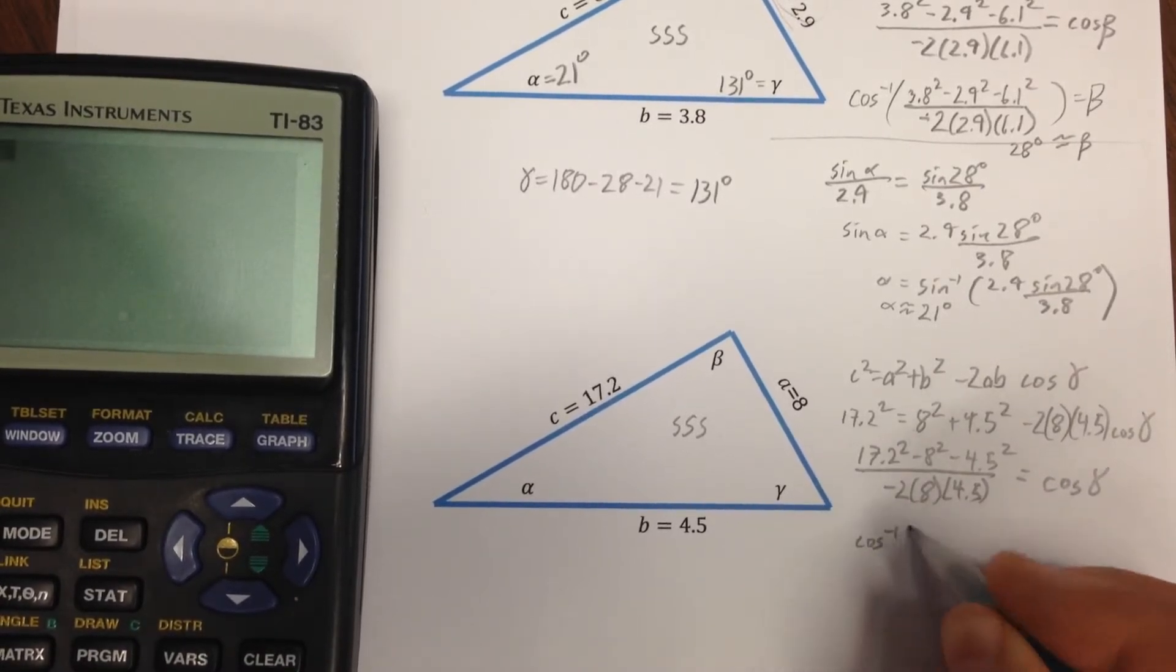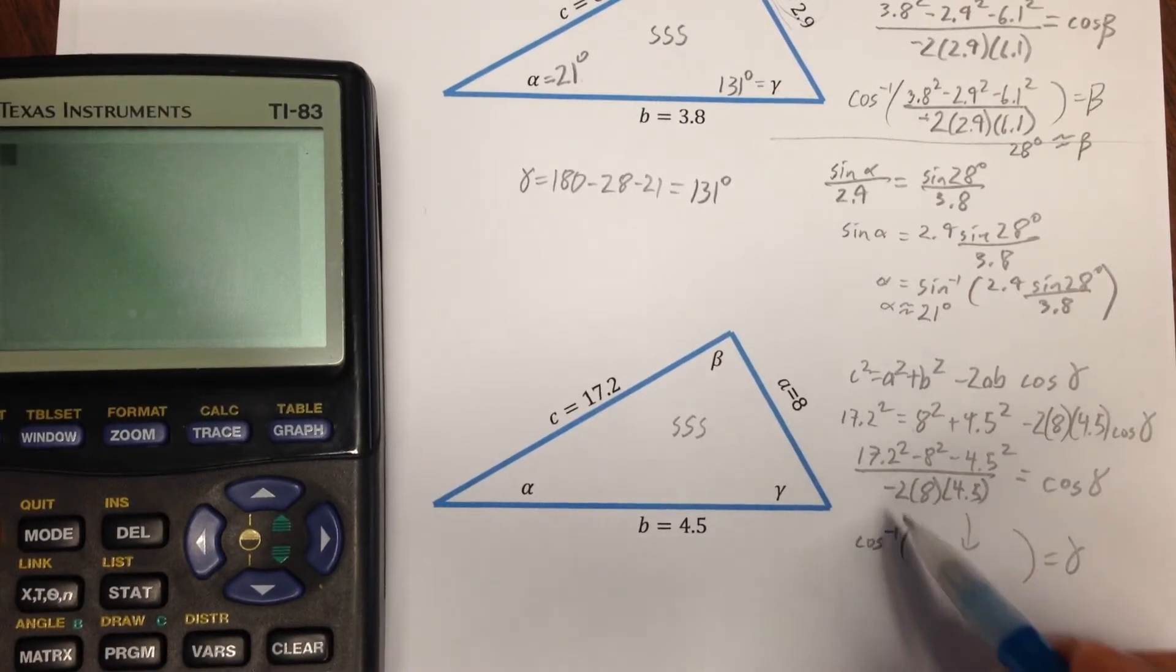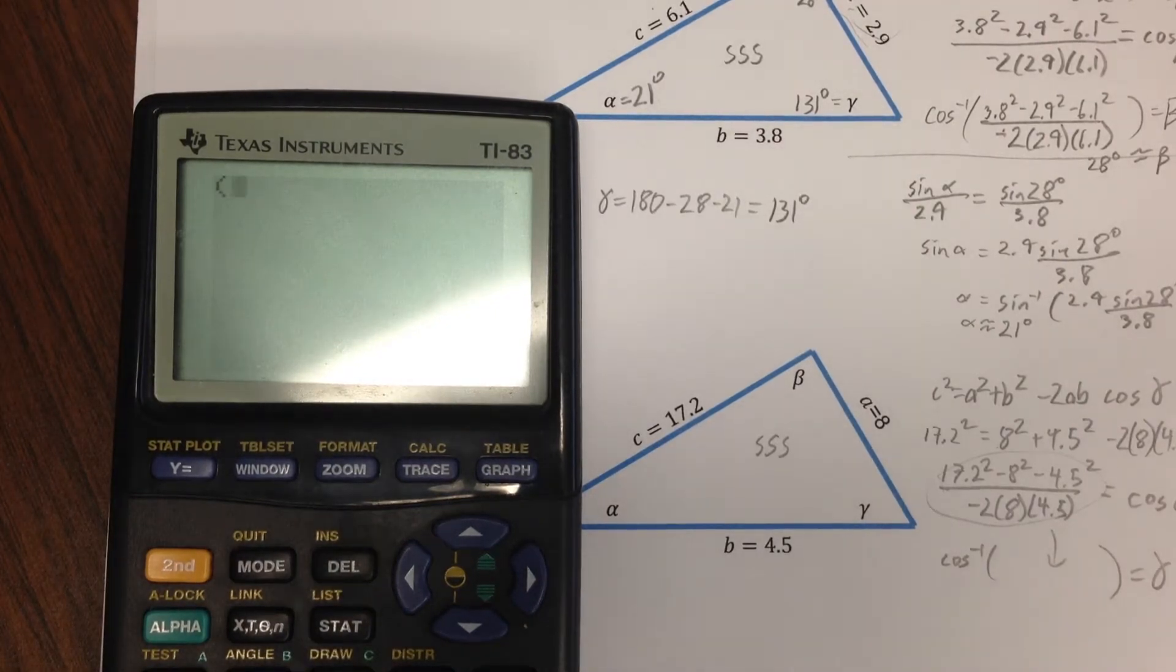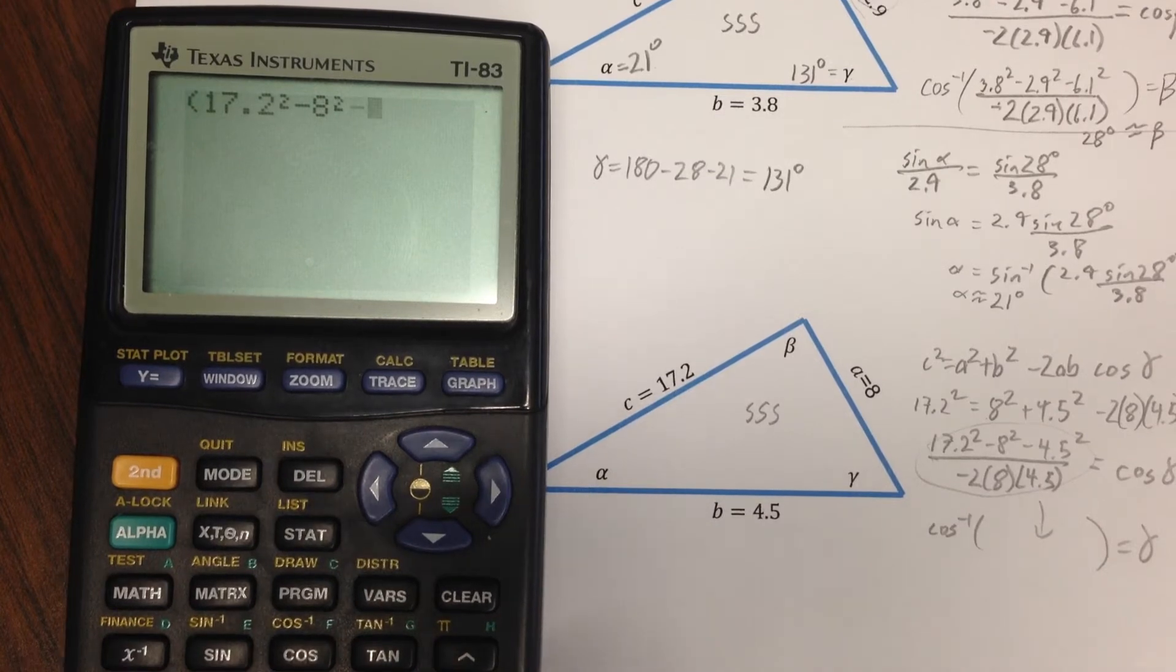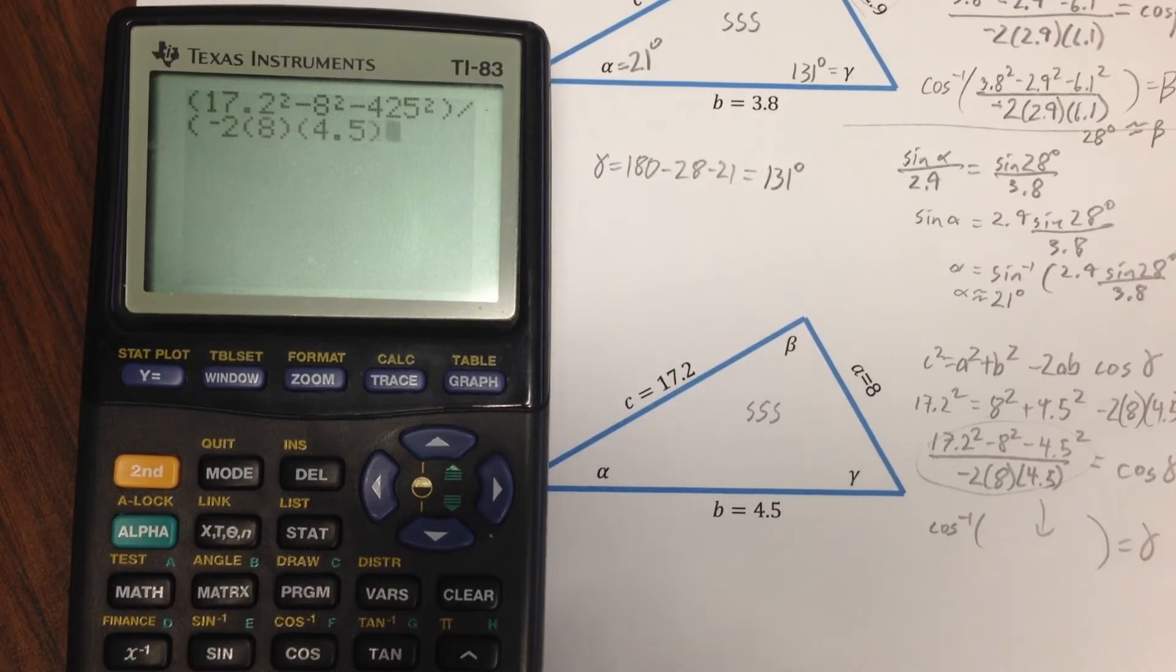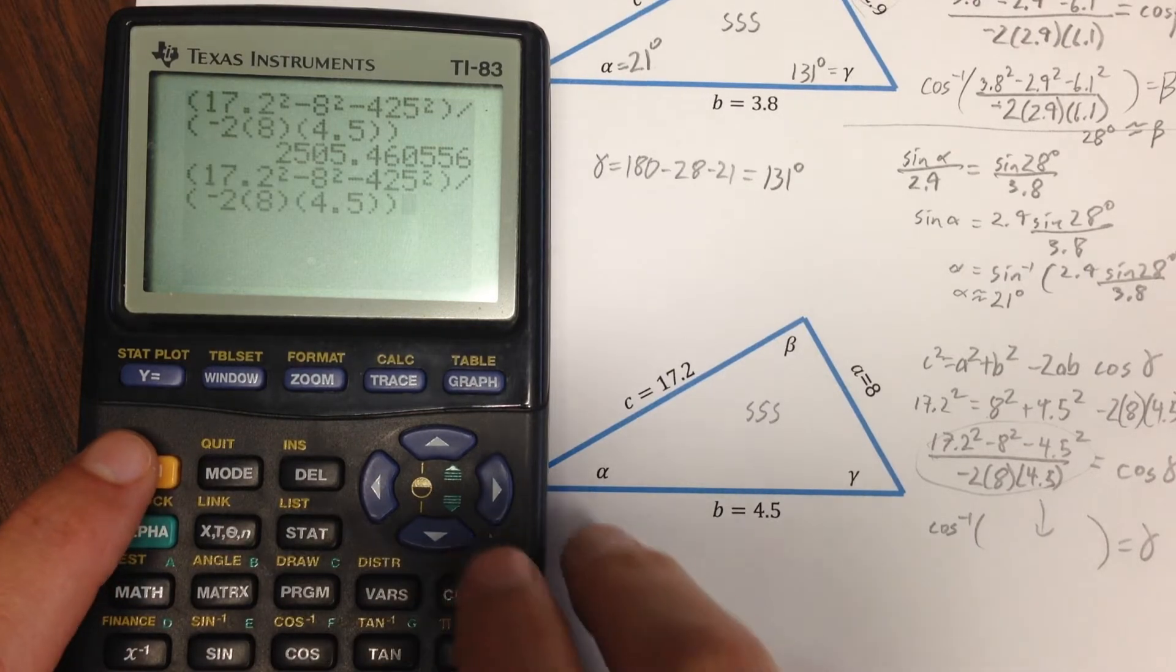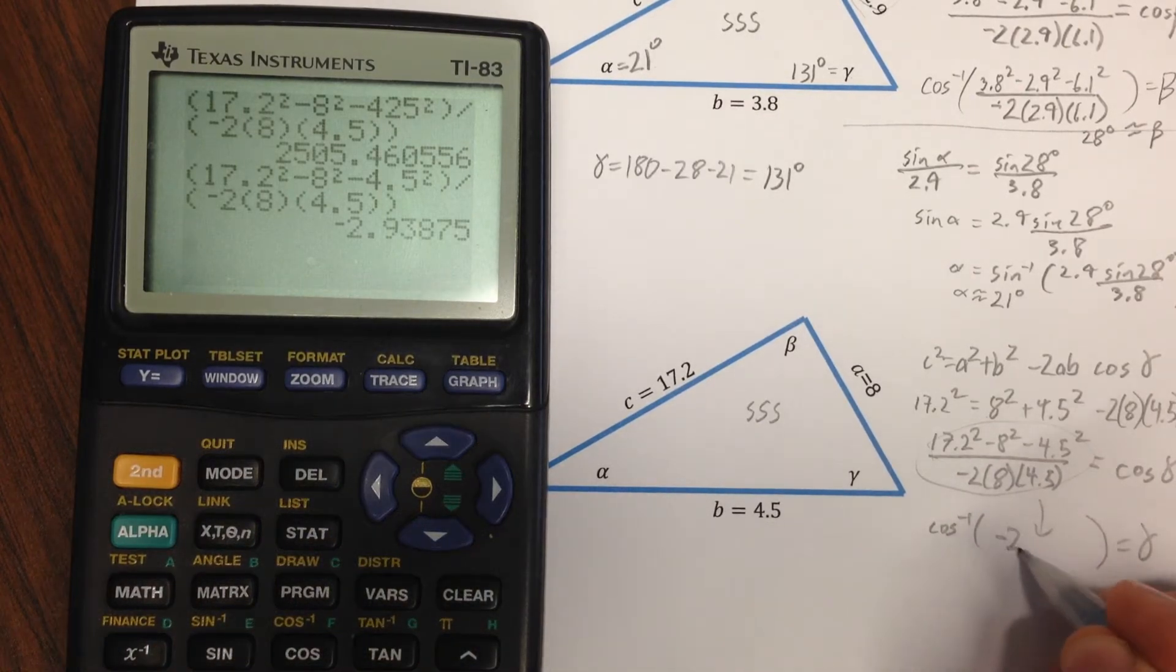So, that means I want cos inverse of that piece there. Now, there's something amiss happening right here. And so, I'm going to actually plug this number in and show you what happens here. Let's say that I plug in the quantity 17.2 squared minus 8 squared minus 4.5 squared divided by the quantity negative 2 times 8 times 4.5. Ooh. That's, that's problematic. Something went wrong. Can you see? So, luckily we can go entry and I can actually go back up and I can fix that. That's a little more reasonable. But notice what happens here. This number is negative 2.9.